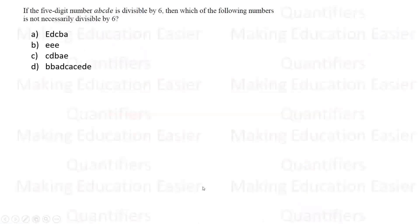Now let us discuss this question, students. The question says five digit number ABCDE is divisible by 6, which of the following numbers is not necessarily divisible by 6?